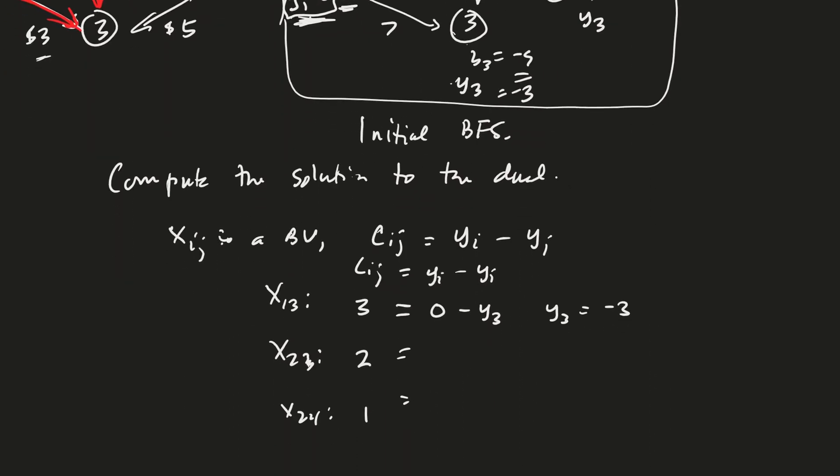Alright. Now for 2, 3, we have the cost 2 is going to be Y2 minus Y3. So that's Y2 is unknown still, but Y3 is known, right? So Y2, it looks like it's minus 1, huh? Good.